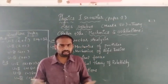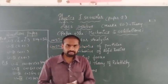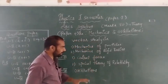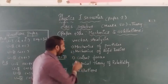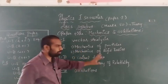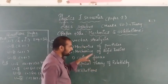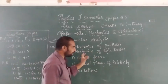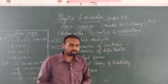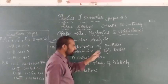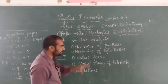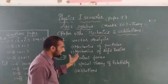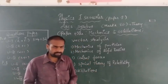Under Mechanics of Particles we learn Newton's first, second, and third laws, and also variable mass systems and motion of a rocket. In the second chapter, Mechanics of Rigid Bodies, we learn what is a rigid body, what is rotational motion, rotational kinematic relations, Euler's equations, and gyroscope. In Unit 3 we have two chapters: Central Forces and Special Theory of Relativity.